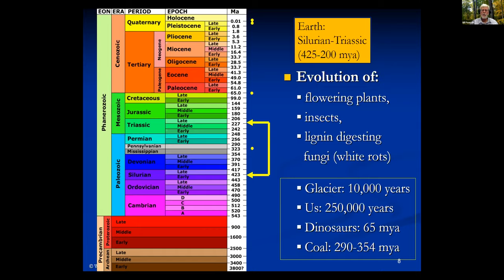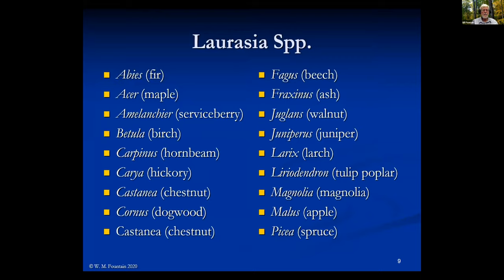All of these plants were beginning to evolve on the two continents, Laurasia and Gondwana. Here is part of the list of plants that developed on Laurasia - we recognize all of these as very common garden plants. These include the firs, maples, serviceberries, birches, hornbeams, hickories, chestnut, dogwood, beech, ash, walnut, juniper, larch, and the list goes on. All of these are common to North America, Europe, and Asia.